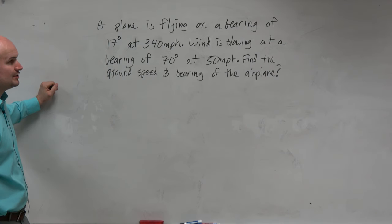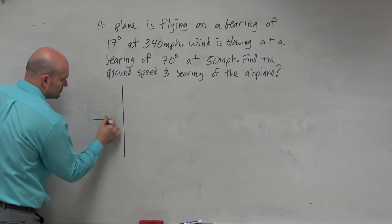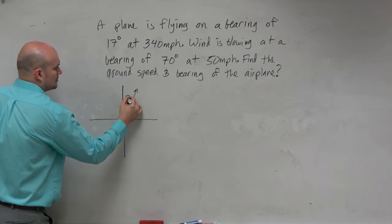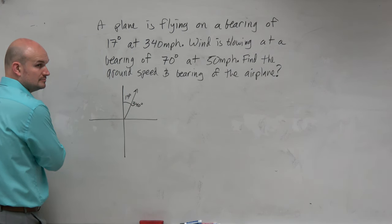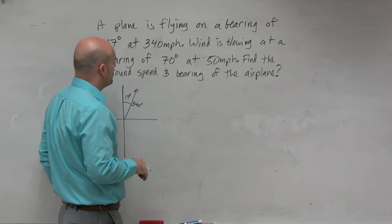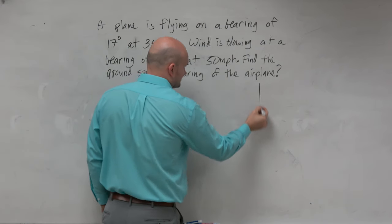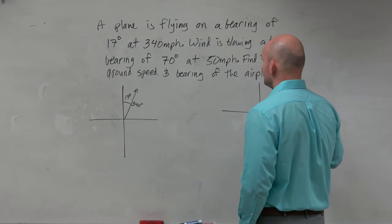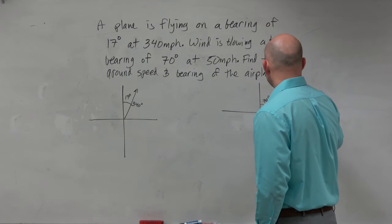So a plane is flying on a bearing of 17 degrees. Well, we can represent this as a vector — 17 degrees, and that would be 340. And then if we want to represent the bearing of the wind, that's blowing at 70 degrees, which is going to be something like this. And that's going to be flowing at 50 miles per hour.